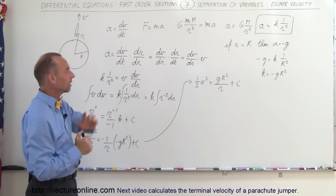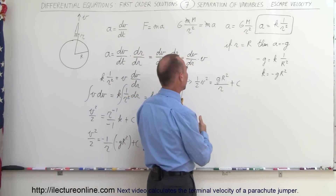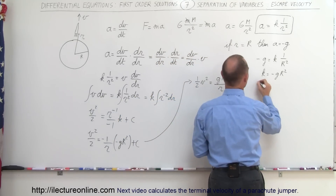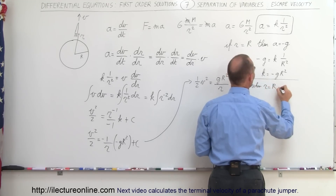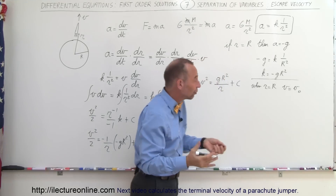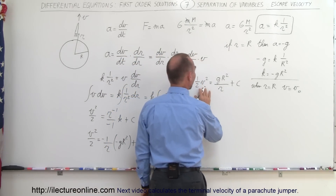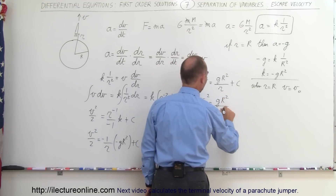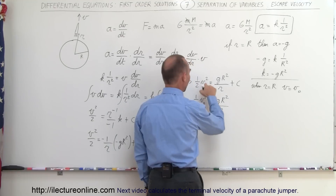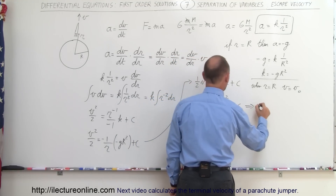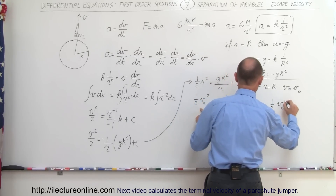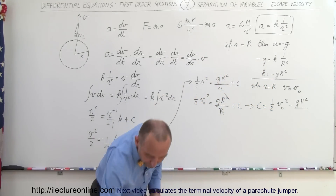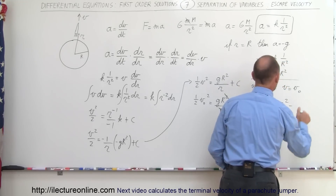Next I want to eliminate the constant of integration using initial conditions. When R equals the radius of the Earth, V equals V-initial — the initial velocity of the spaceship when it leaves Earth. Plugging in: one-half V-initial squared equals g times R squared divided by the radius of the Earth plus C. Therefore, C equals one-half V-initial squared minus g times R squared over big R, which simplifies to one-half V-initial squared minus g times R.